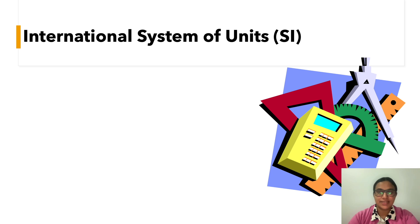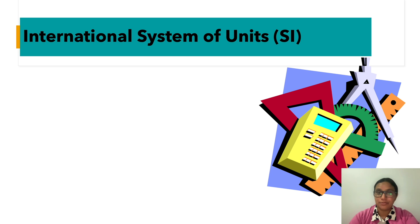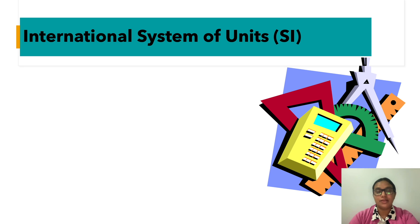What is the international system of units, or SI units? SI stands for Système International. The US uses the English system for measurements, whereas the rest of the world uses the metric system. Most people in the world know exactly how long a kilometer is, how large a liter is, or how much a kilogram weighs, because they use these units every day. Similarly, Americans use miles, gallons, and pounds.